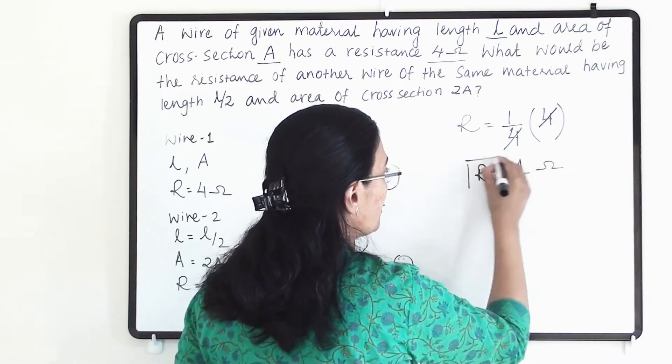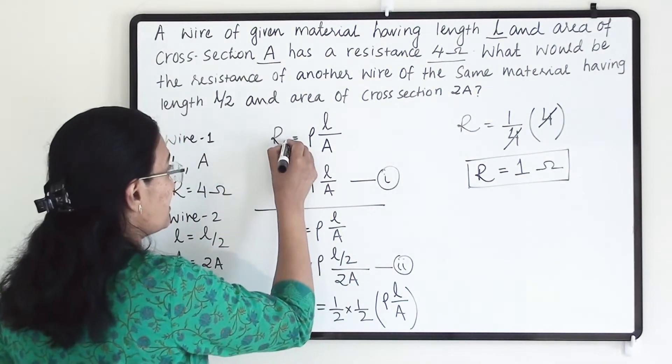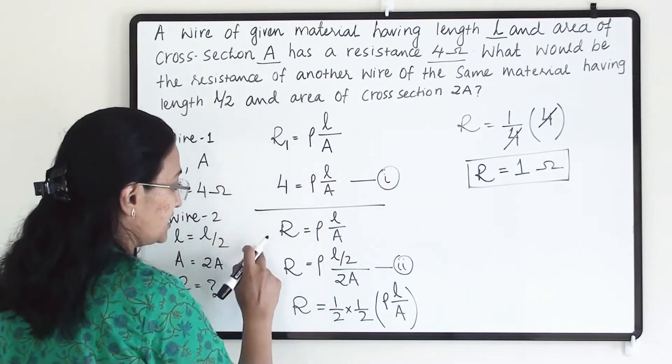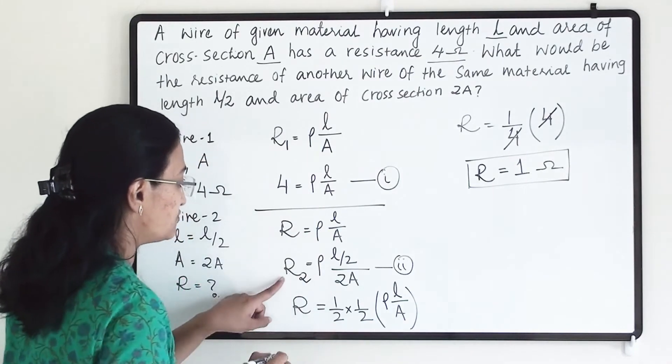Since this is resistance, we will get 1 ohm. Unit of resistance will be 1 ohm. Here we can also write that this is for wire 1, so this is resistance 1, and this is going to be our resistance 2 because this is for wire 2.